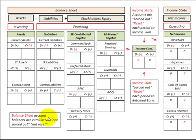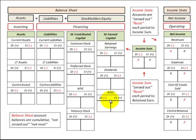The balance sheet accounts, which include all of the assets, liabilities, contributed capital, and earned capital, are not zeroed out. They are not reset — they're just an accumulative amount. And that's how the income summary account works.